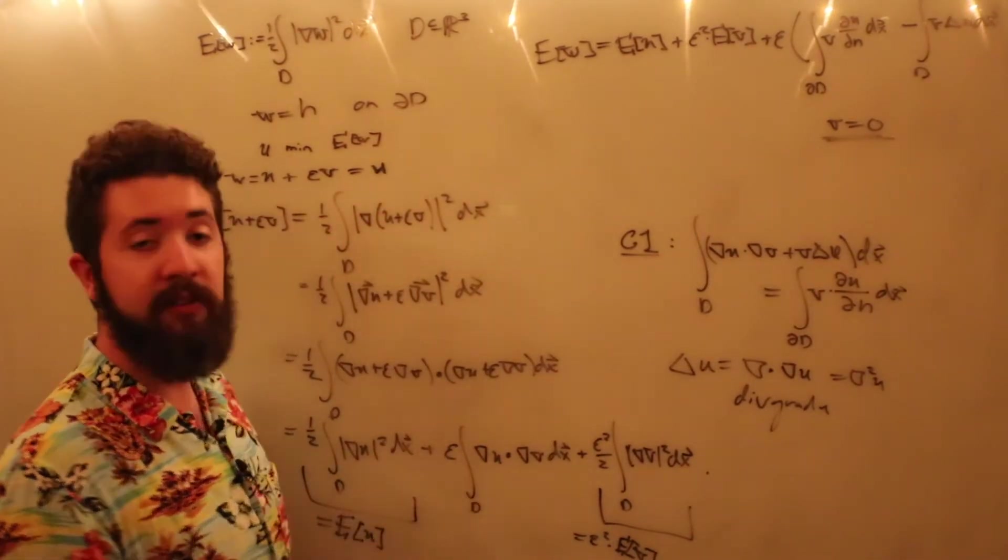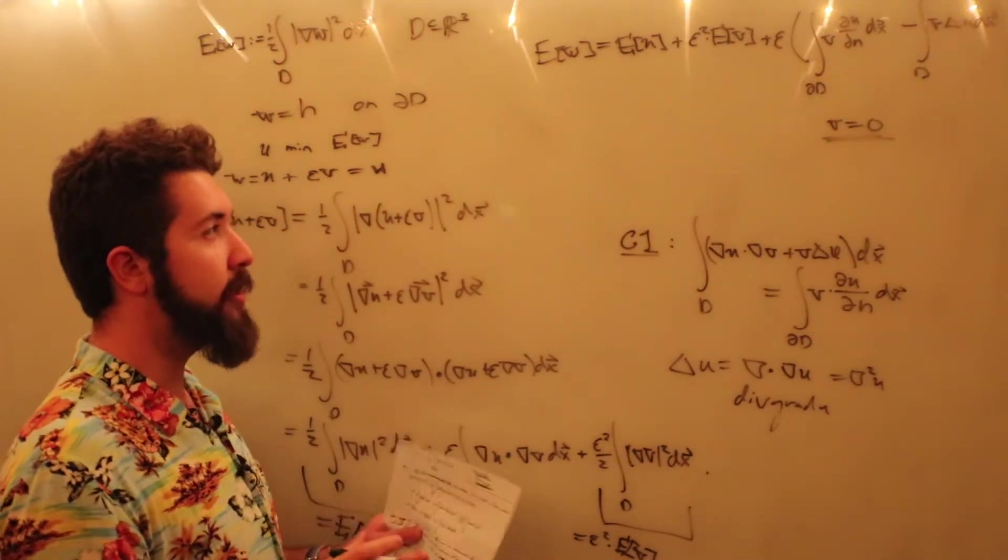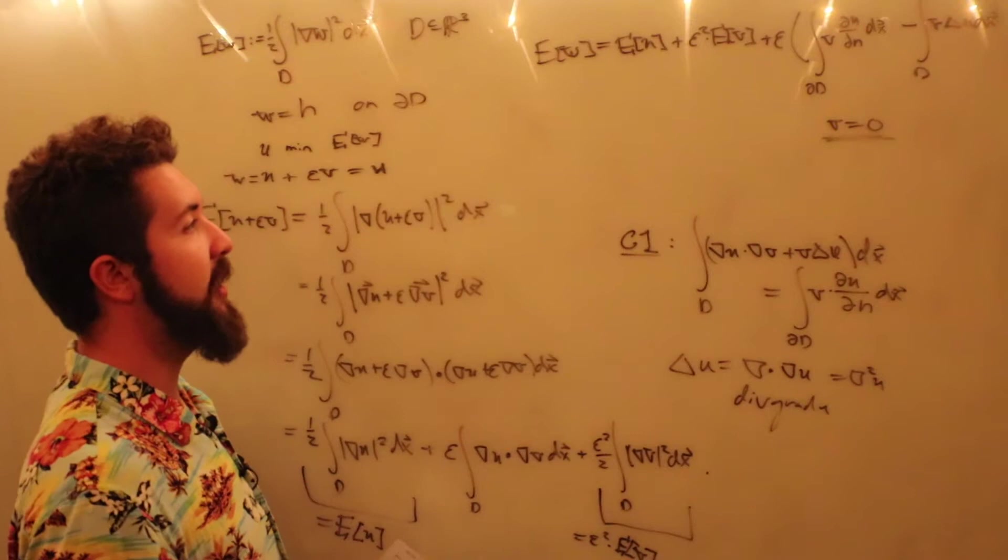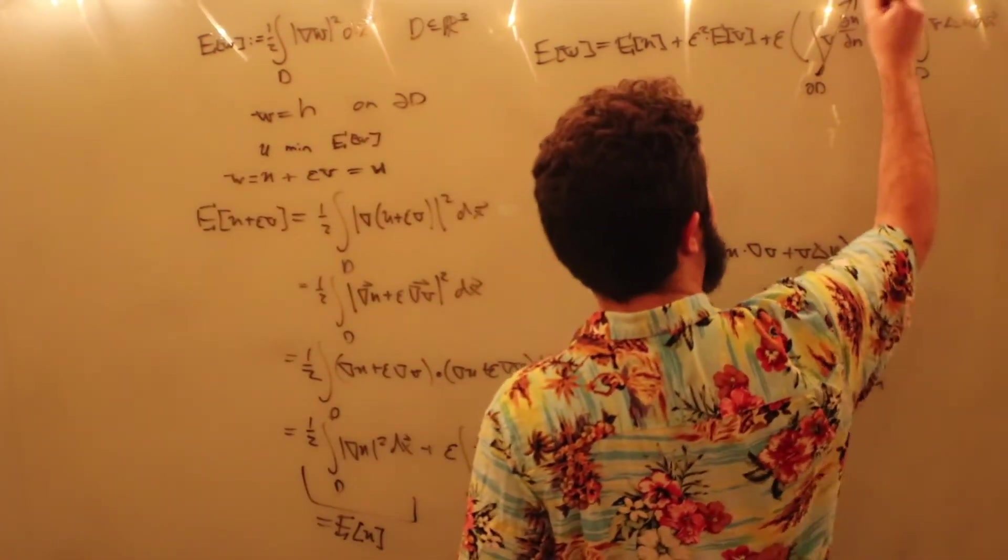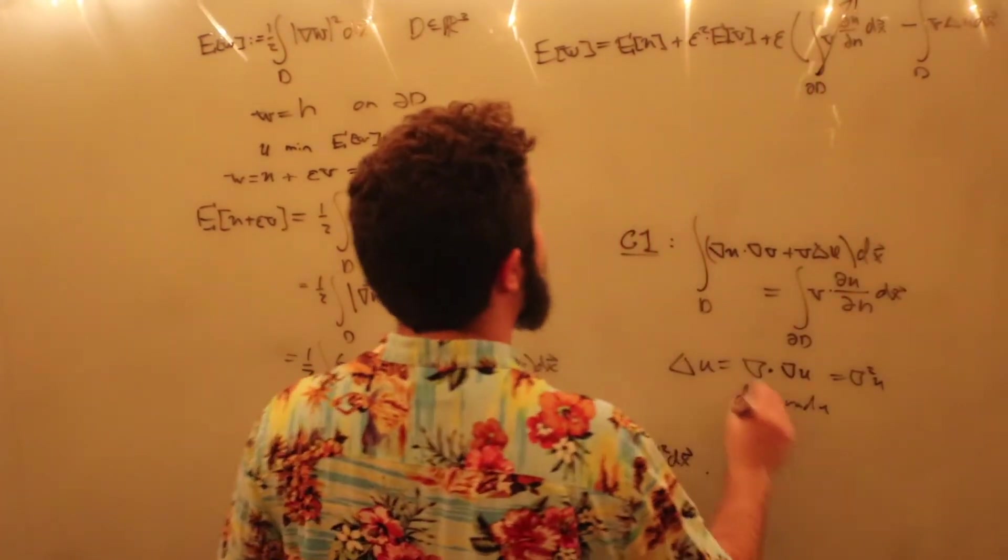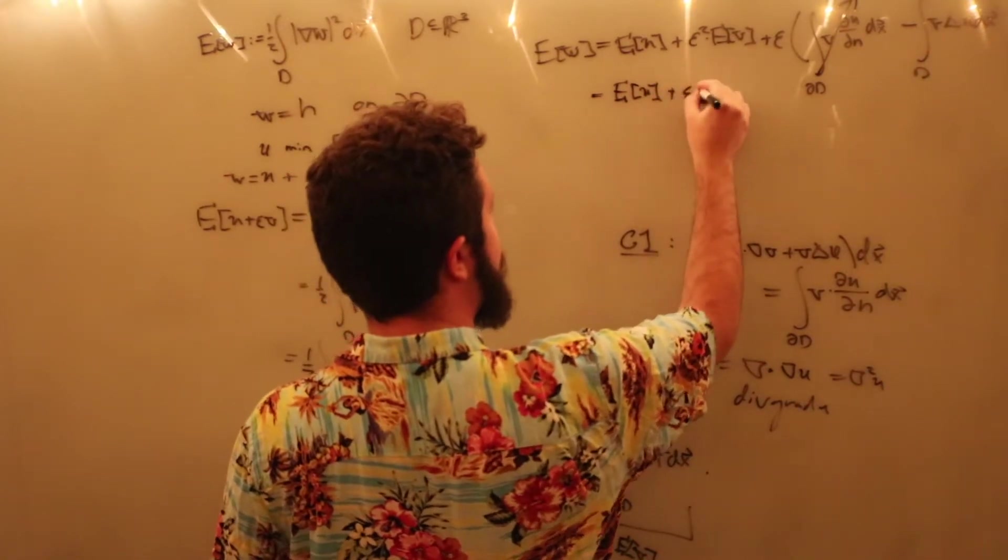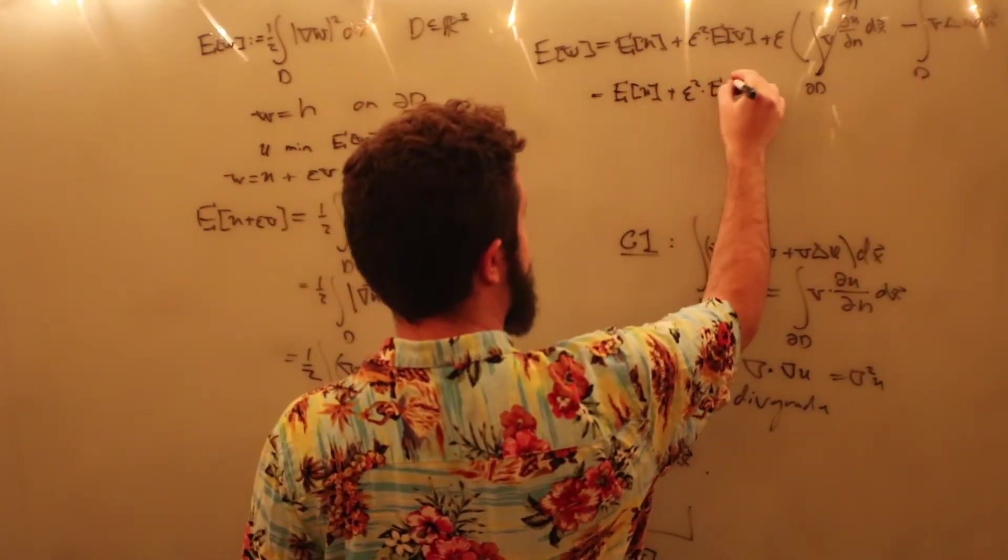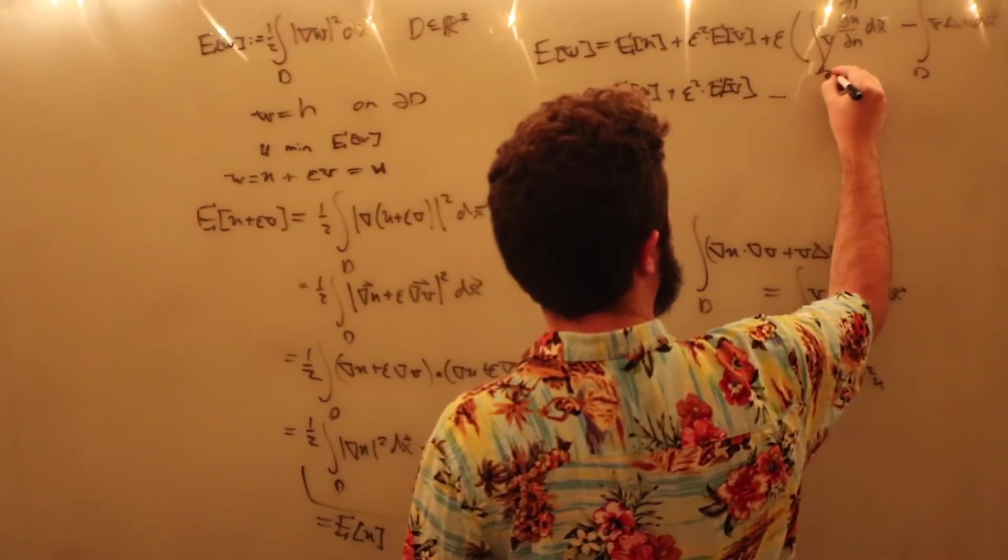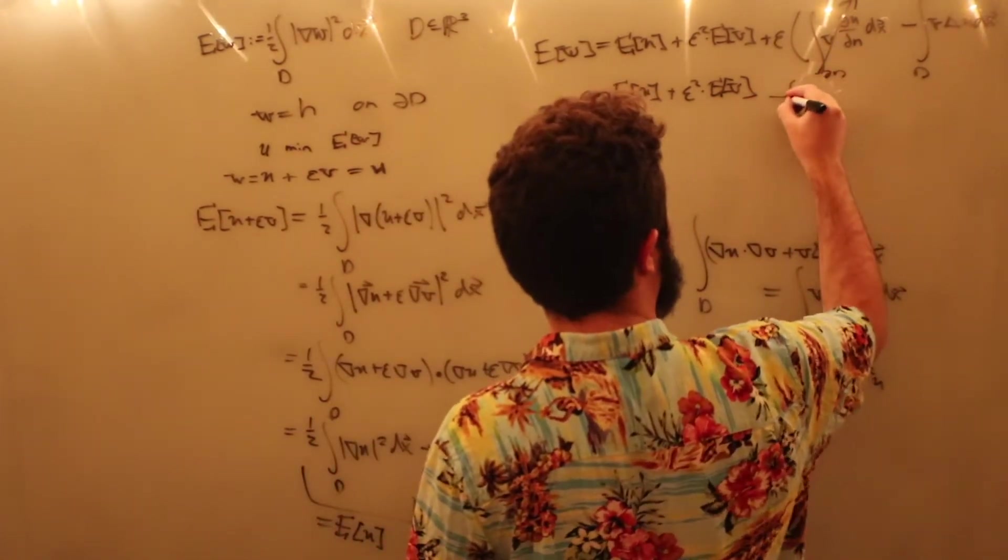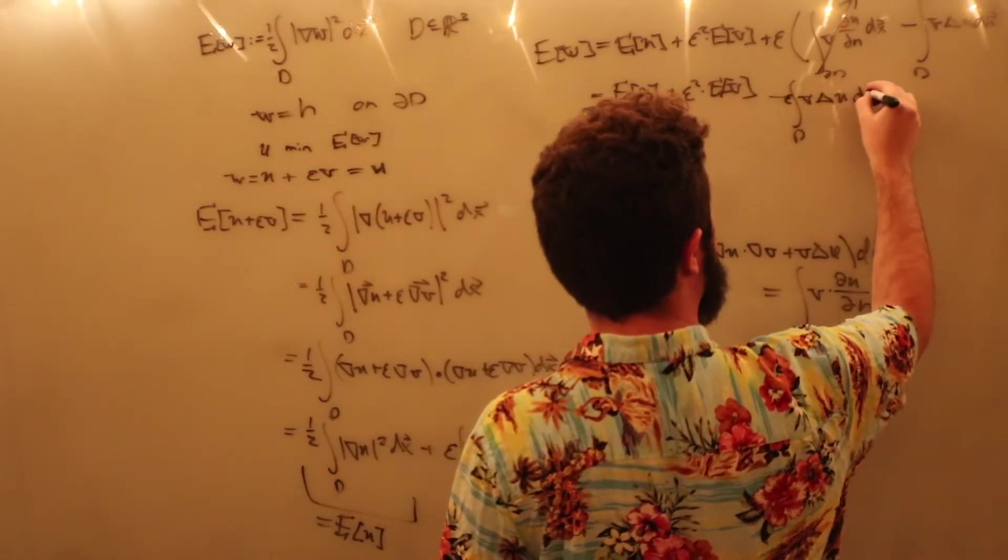So, v is going to be zero on the boundary, it's still going to be arbitrary inside the region d, but we're just going to impose that restriction that it's zero on the boundary. So that means that this is just going to be zero, and we're going to get the following. It's equal to the energy of u plus epsilon squared times the energy of v, and then minus epsilon times the integral over d of v times the Laplacian of u dx.